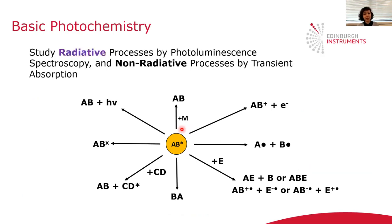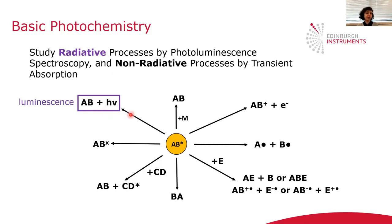The radiative relaxation pathway can be studied typically by photoluminescence spectroscopy. All these other pathways can potentially be followed by transient absorption.